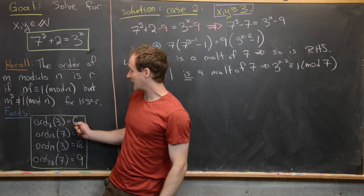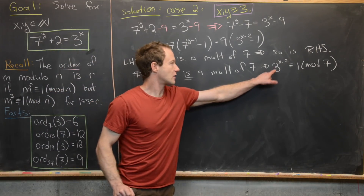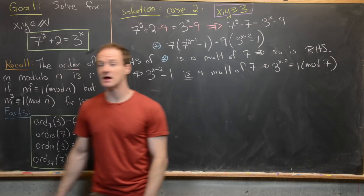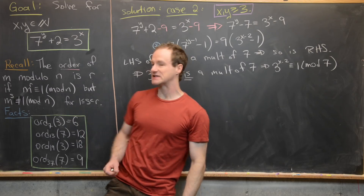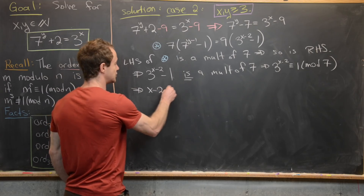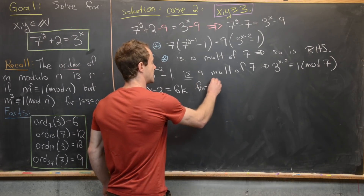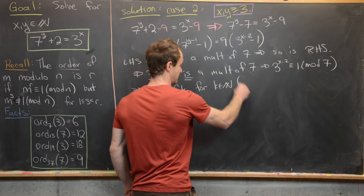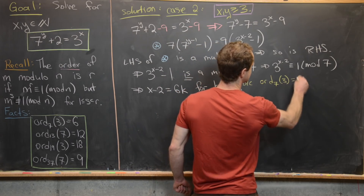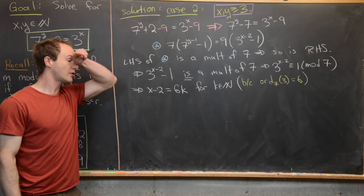Since the order of 3 mod 7 is 6, any power of 3 congruent to 1 mod 7 must have an exponent that is a multiple of 6. Therefore x − 2 must be a multiple of 6; we write x − 2 = 6k for some natural number k. We loop this back into the equation and continue.